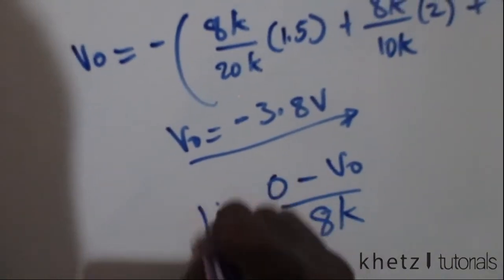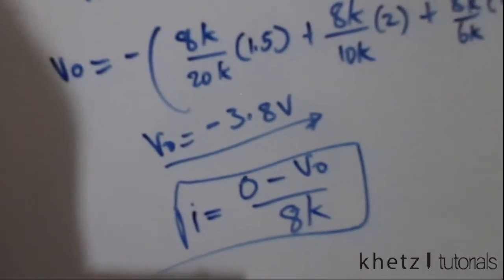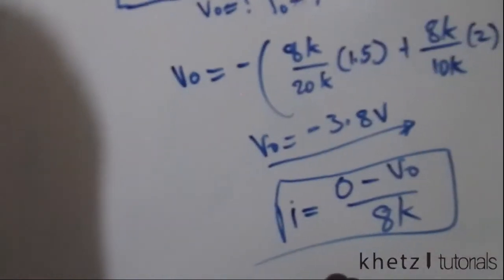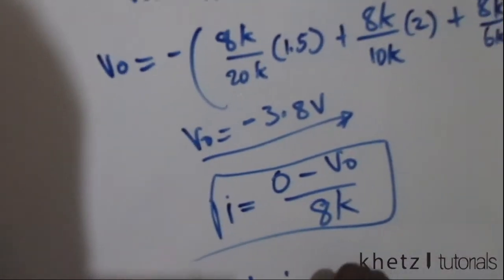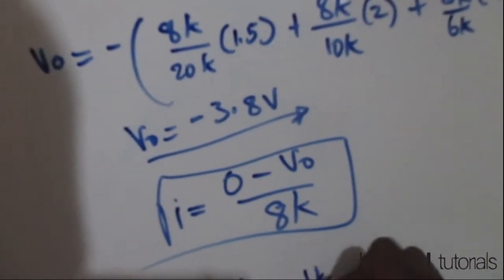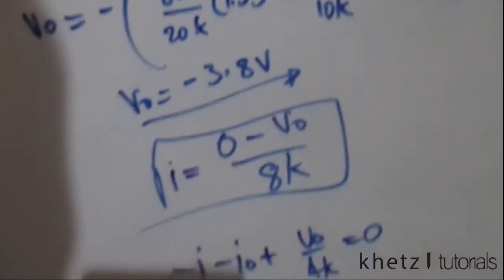So now at this node we have i going in, so we have negative i. We have io going in, we have negative io. So finally we have vo divided by 4k, which we assume to be going out.